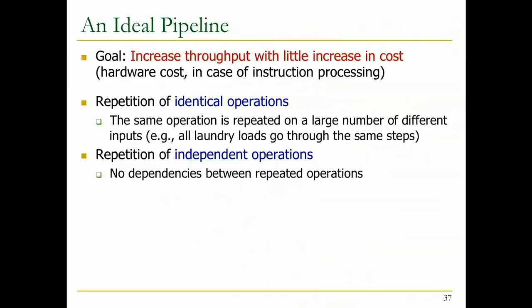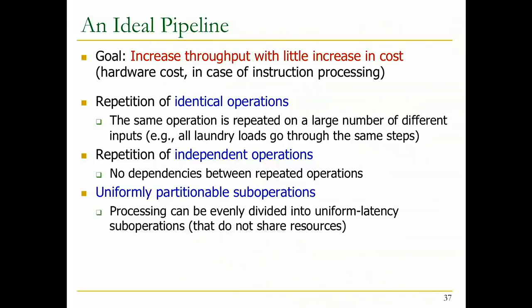There's another problem with instruction processing: how do you know which instruction to fetch next? If you're going sequentially that's good, but what if you have a branch instruction that's dependent on data - branch-equal for example in MIPS? You can't figure out what to put into the pipeline at that point. You can guess - say 'I'm not going to take this branch so I'll keep going sequentially' - but that's a guess. You need to verify that guess, and if you're wrong you need to flush the pipeline. This is control dependence, a special case of data dependence.